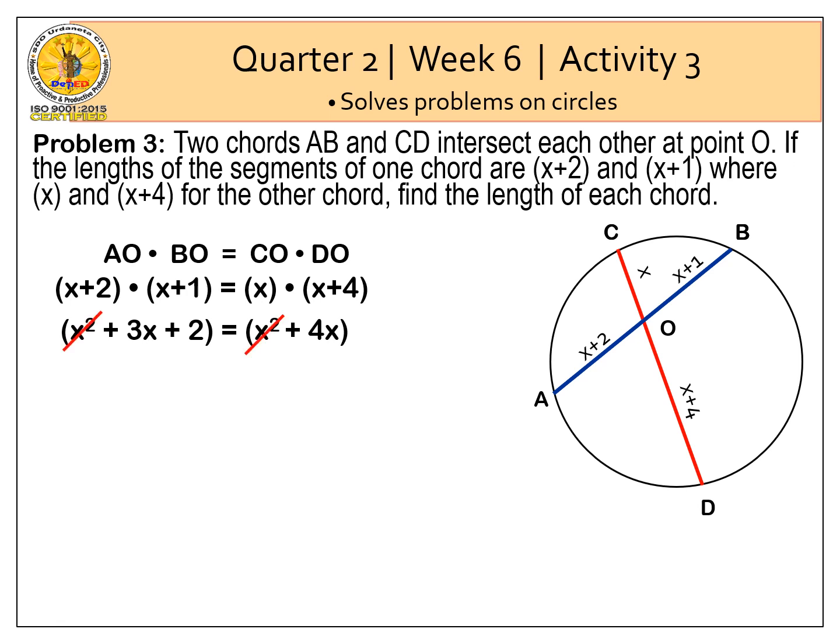We cancel X squared on both sides to simplify. So we have 3X plus 2 equal to 4X. X is equal to 2.